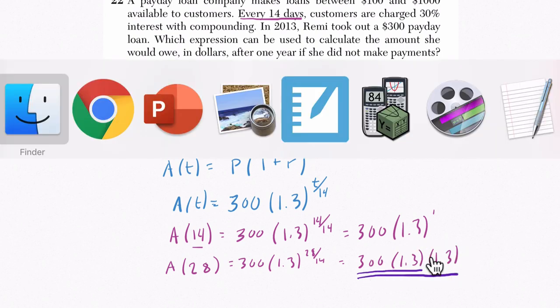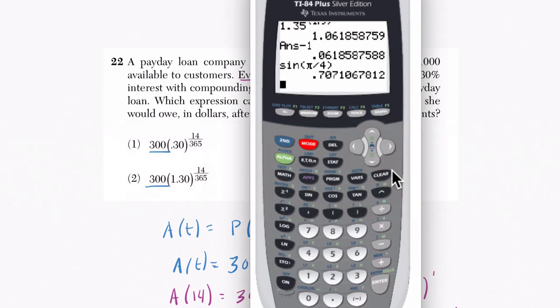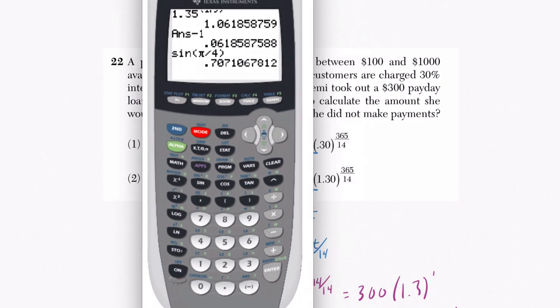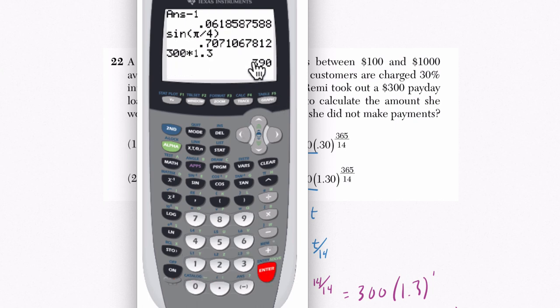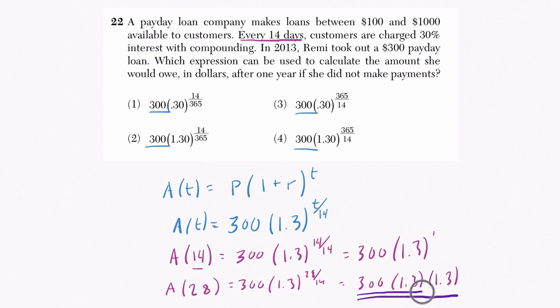So just to see what that looks like on a calculator, let's pull it up. So that would mean you have 300 times 1.3. She would owe $390. And then multiply that by 1.3 again. It's compounding. So you'd owe 30% more than you did before. And altogether, you'd owe $507. So this is giving the total amount you owe.